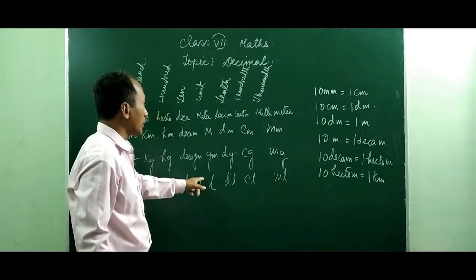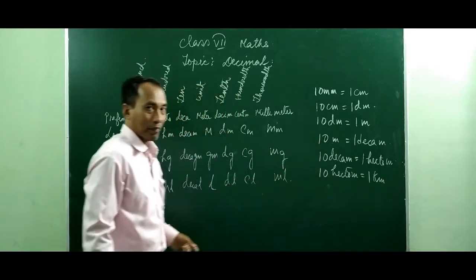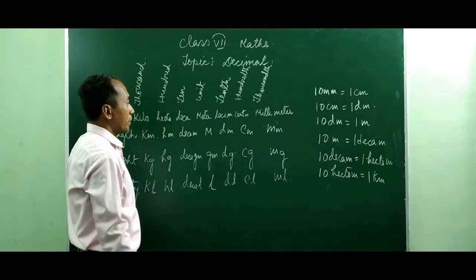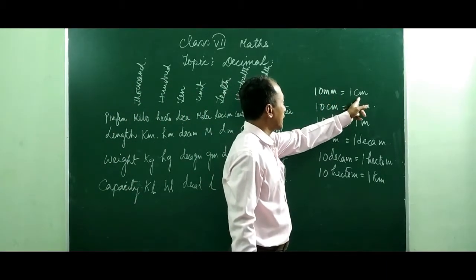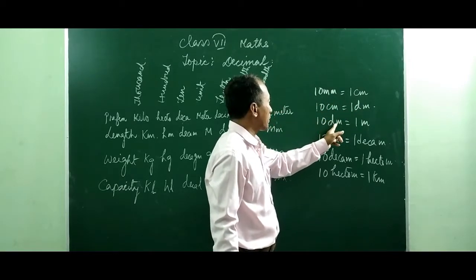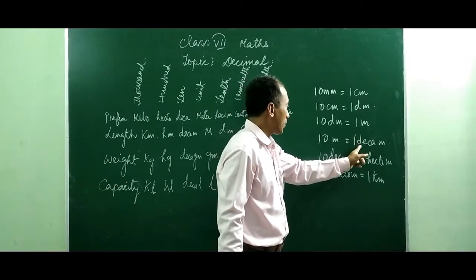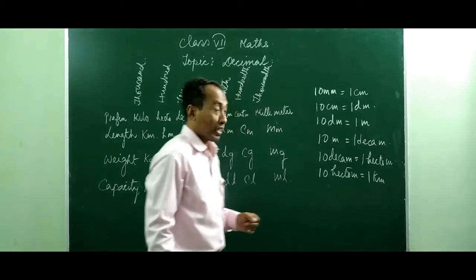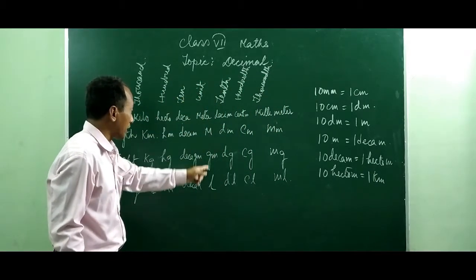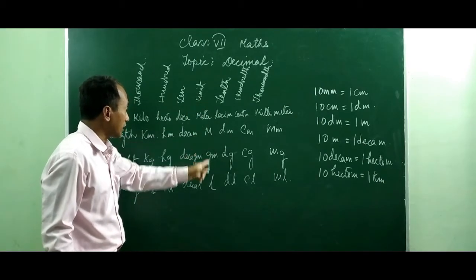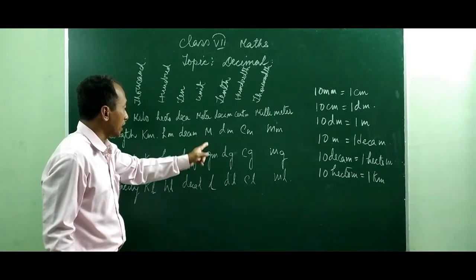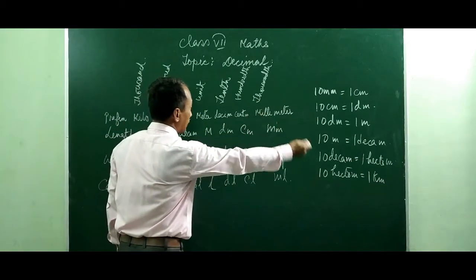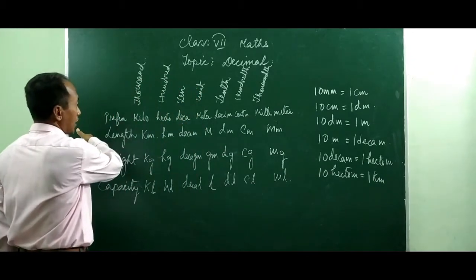Decimal has got a relationship with the measurement system. The measurement system is: ten millimeters equals one centimeter, ten centimeters equals one decimeter, ten decimeters equals one meter, ten meters equals one decameter, ten decameters equals one hectometer, ten hectometers equals one kilometer. Considering the unit place as the meter, gram, or liter — the unit place is the meter, gram, or liter. After the unit place, the rest is the decimal side, and the other side is the number side.